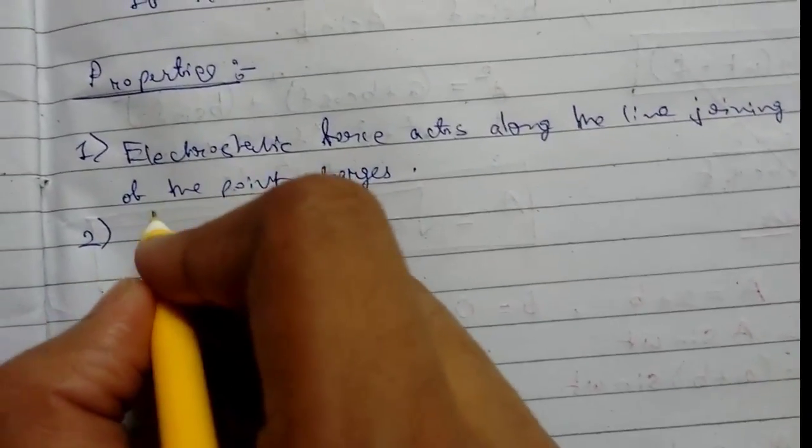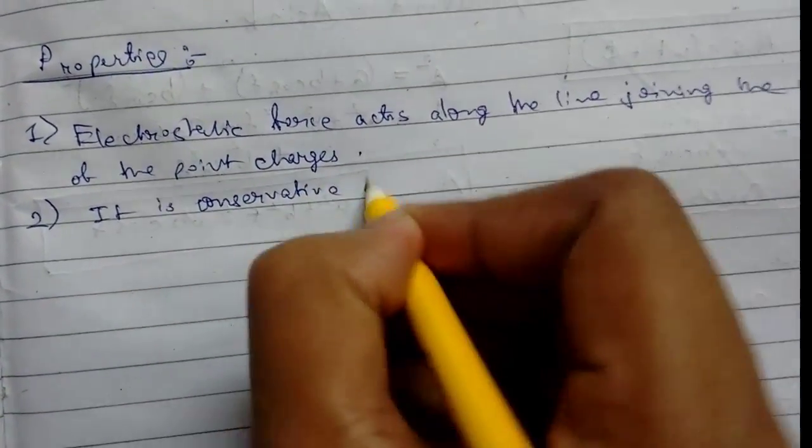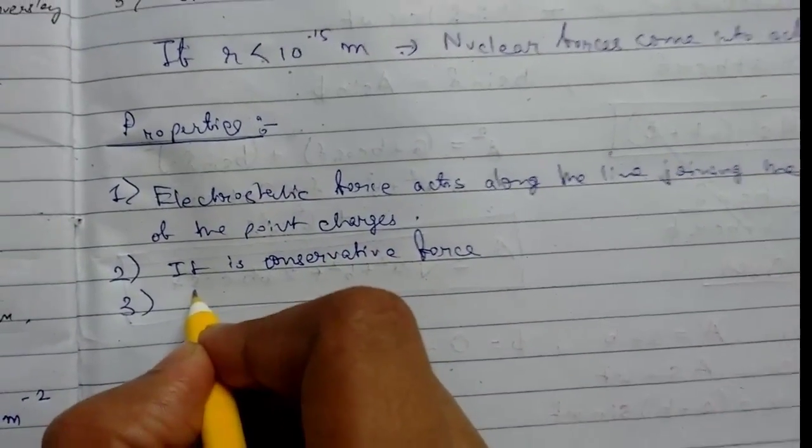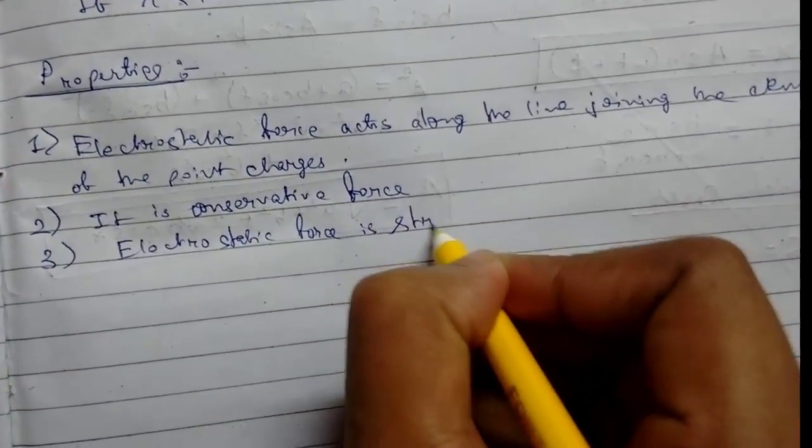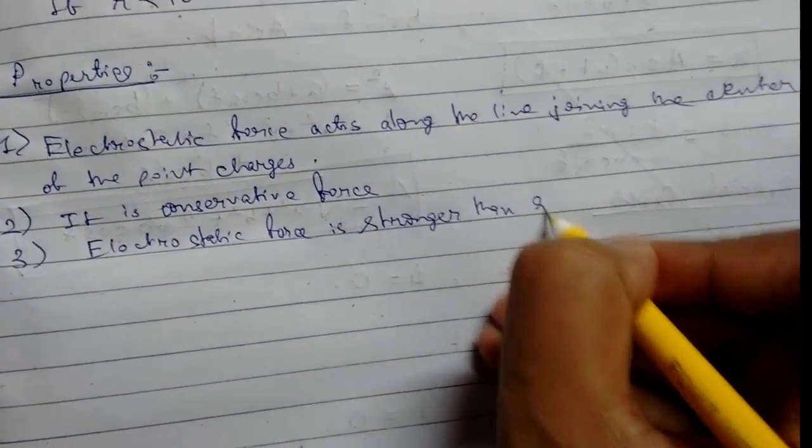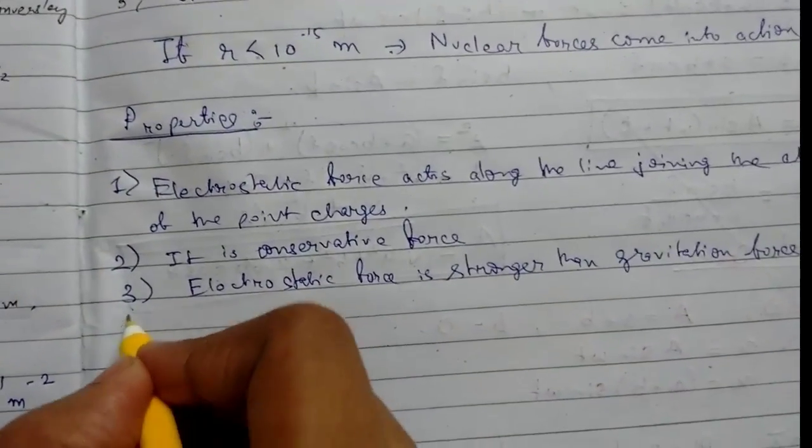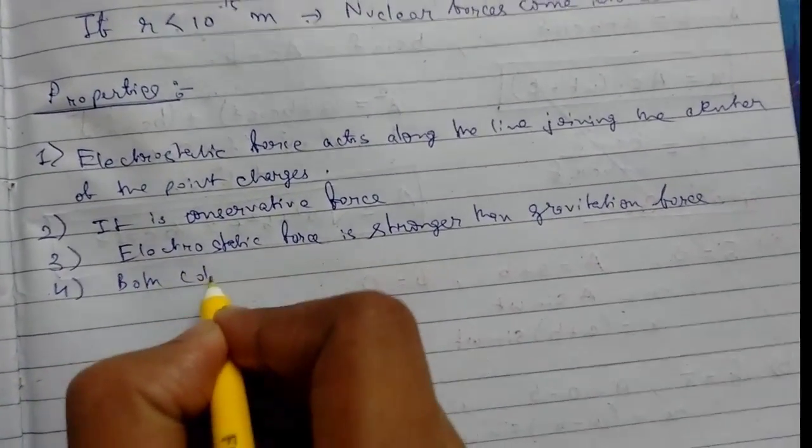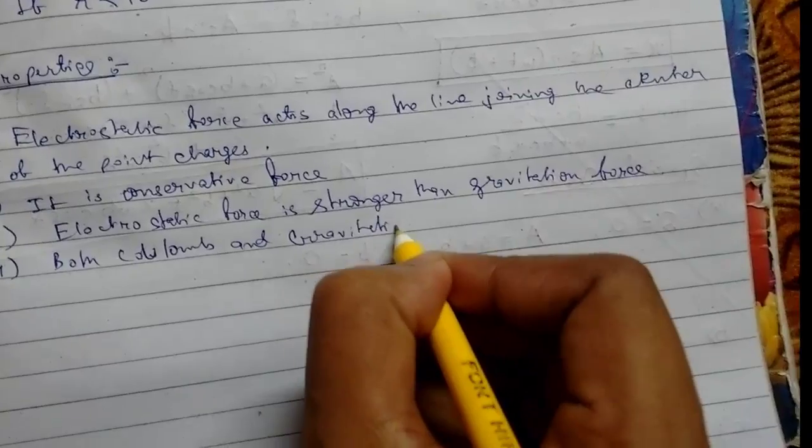Number two: it is a conservative force. Number three: electrostatic force is stronger than gravitational force. Number four: both Coulomb's law and gravitational law are inverse square laws.